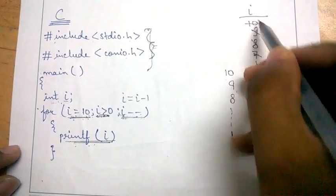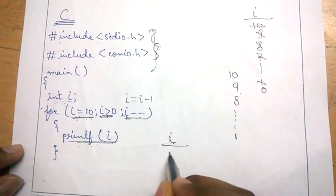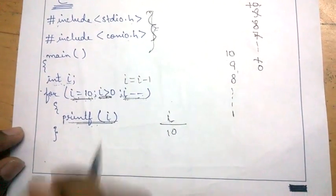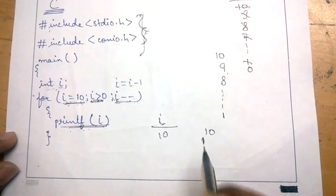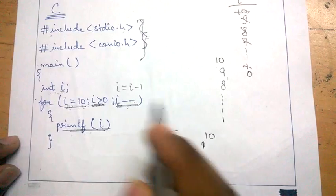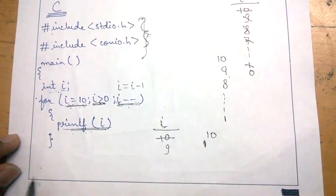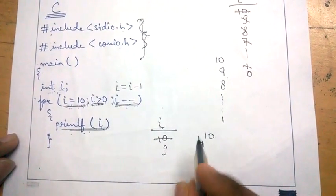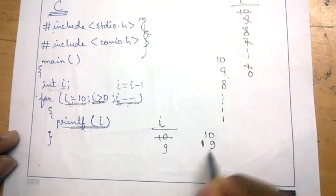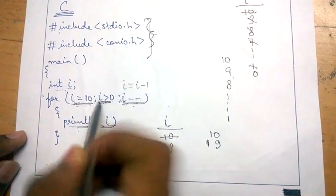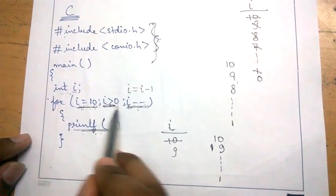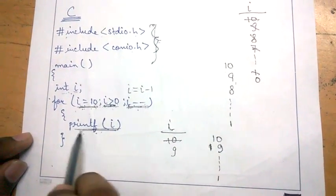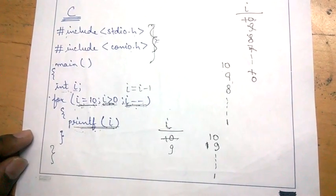The initial condition is i equal to 10. The termination condition is i greater than 0. It comes inside and printf i — so i equal to 10 is printed. Then printf backslash n sends the cursor to the next line. The value of i decreases from 10 to 9. Since 9 is also greater than 0, printf prints 9. This continues until i equals 1 — it is greater than 0 so 1 is printed. Then 1 minus minus gives 0; since 0 is not greater than 0, the loop terminates and the program ends.